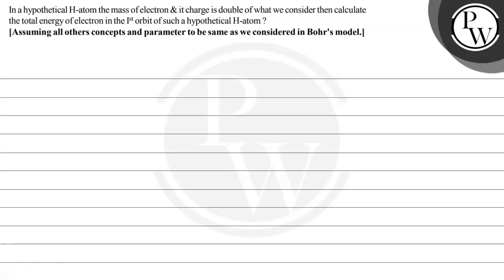Hello, let's read this question. The question says: in a hypothetical hydrogen atom, the mass of electron and its charge is double of what we consider. Calculate the total energy of electron in the first orbit of such